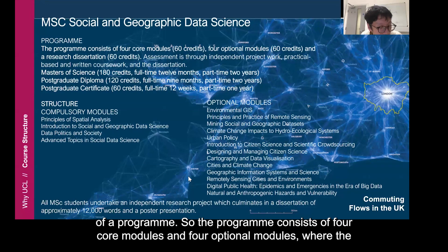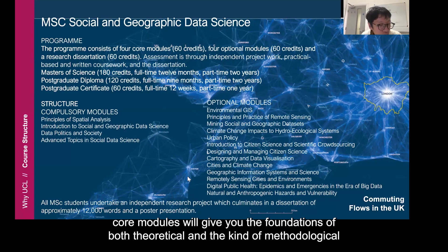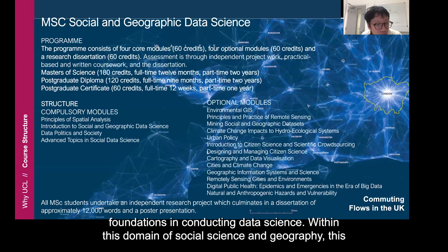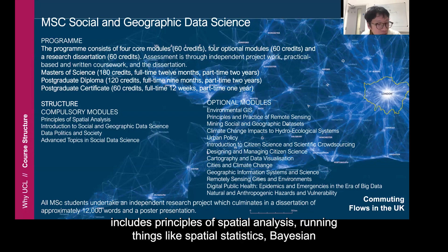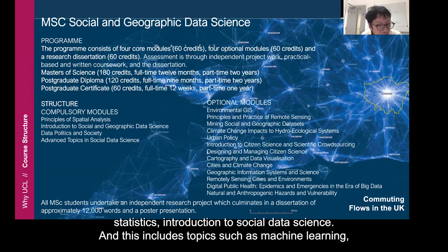This is the structure of our program. The program consists of four core modules and four optional modules, where the core modules give you the foundations — both theoretical and methodological — for conducting data science within the domain of social science and geography. This includes principles of spatial analysis, spatial statistics, Bayesian statistics, and introduction to social data science.